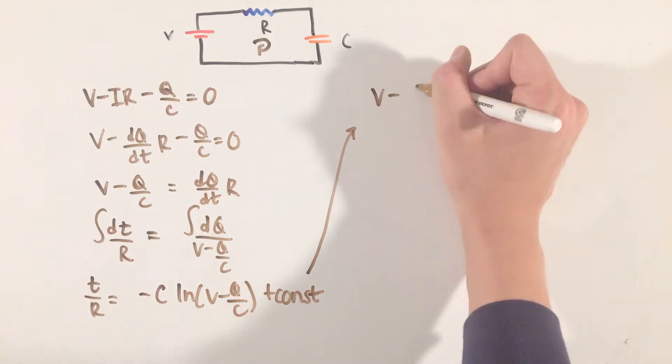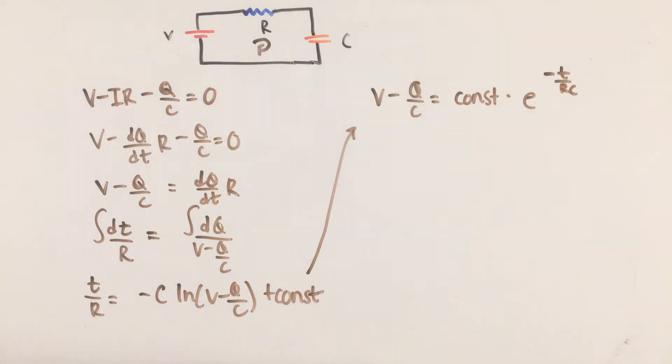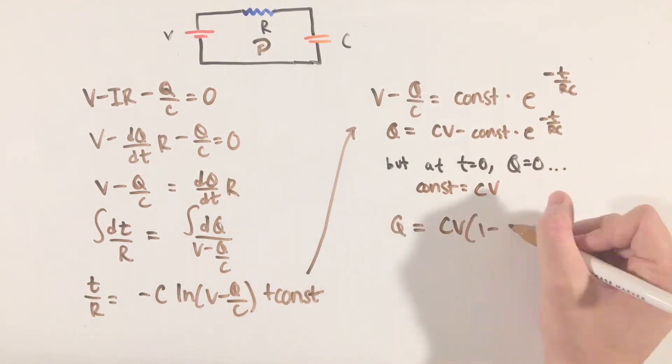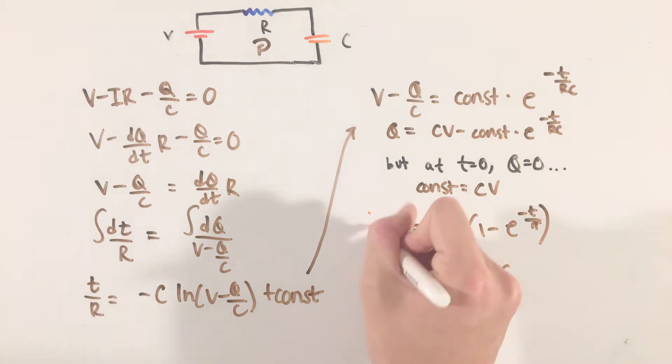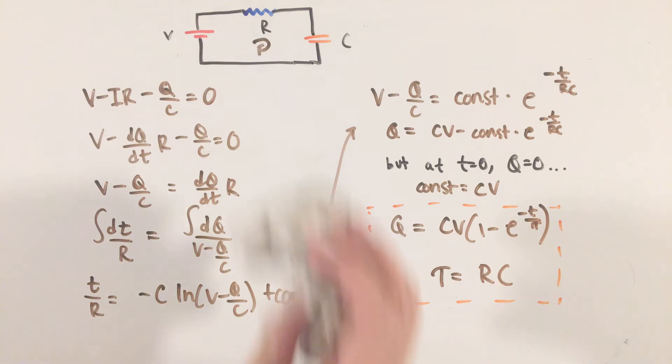Solving with the integration constant being a consequence of the fact that, at time equals zero, the capacitor should have a charge of zero as well, we can arrive at an equation for the charge on the capacitor, where the quantity RC, or resistance times capacitance, is usually noted as the Greek letter tau, or time constant.